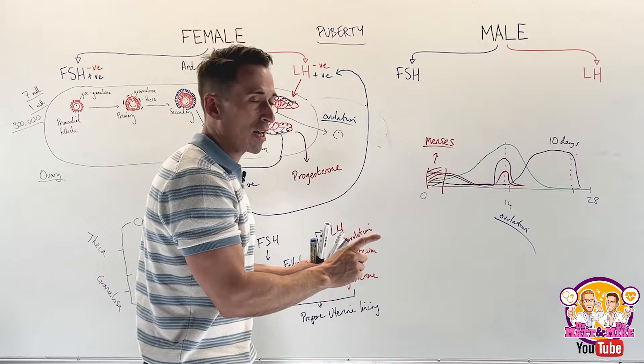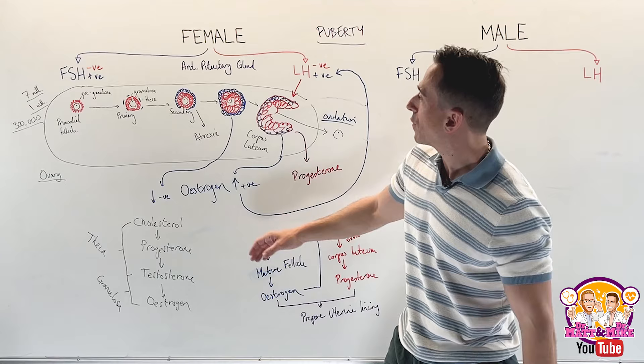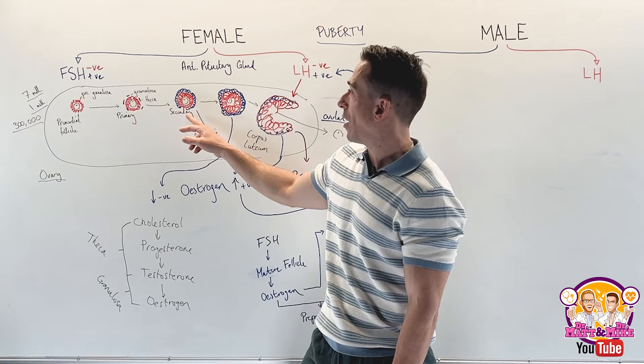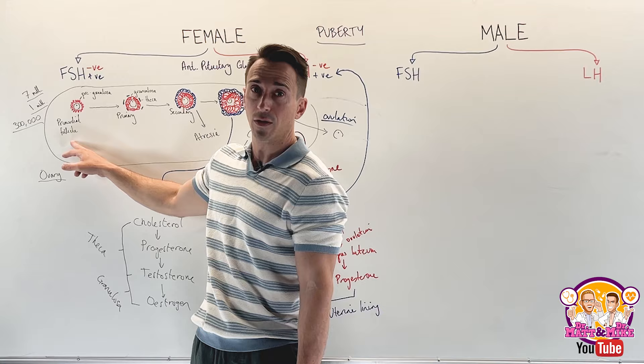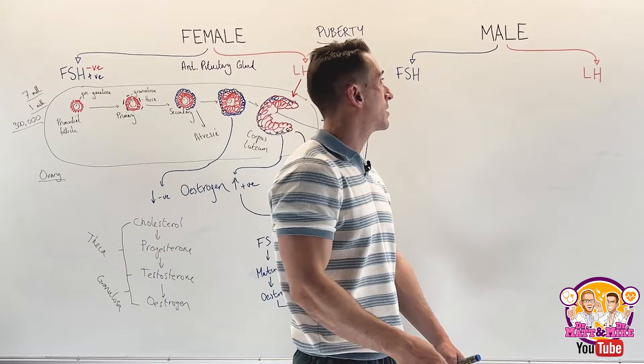That's the role of FSH and LH in the female reproductive cycle. The male reproductive cycle is way simpler. For males, not much is happening until puberty hits — there's no pre-puberty folliculogenesis equivalent like the massive follicle reduction seen in females.